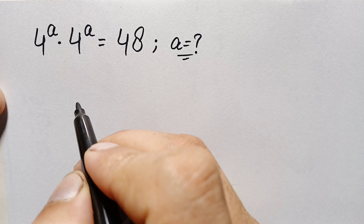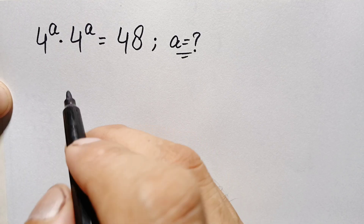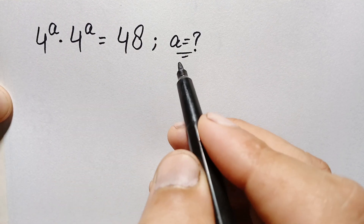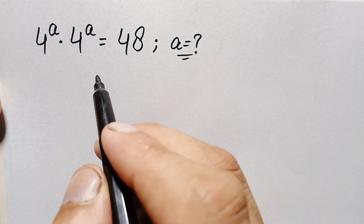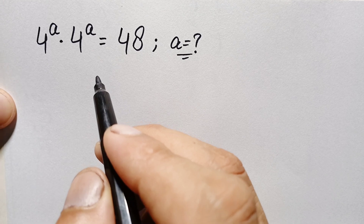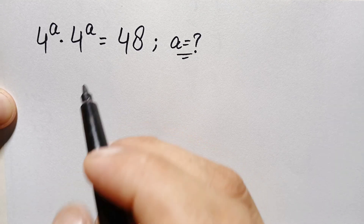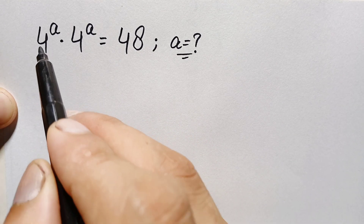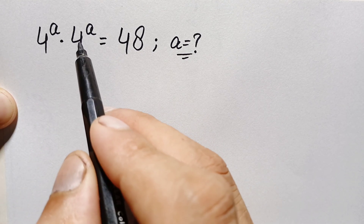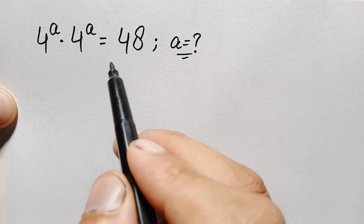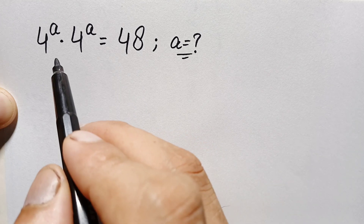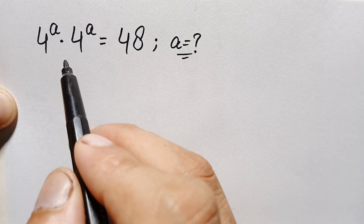Hello everyone, you are welcome. How to solve and find the value of a in this beautiful exponential math problem, which is 4 raised to power a times 4 raised to power a is equal to 48. Now how can we solve this math problem?